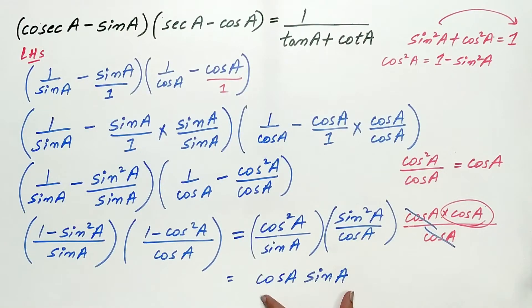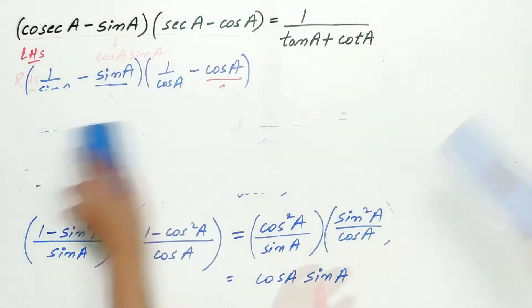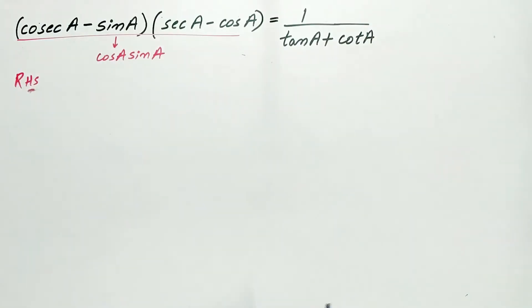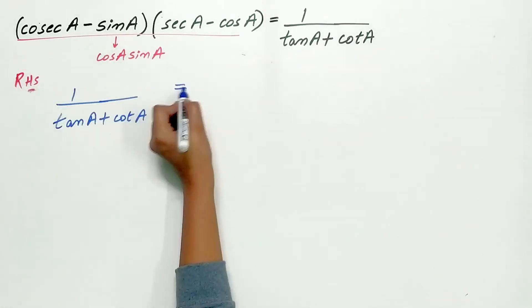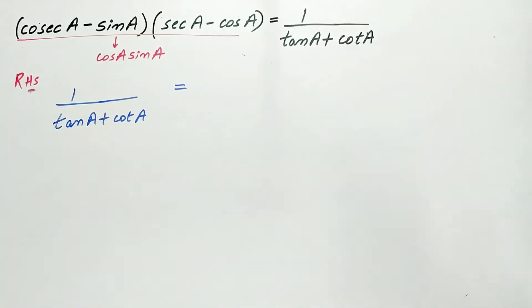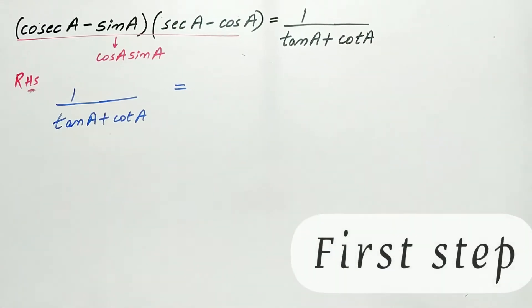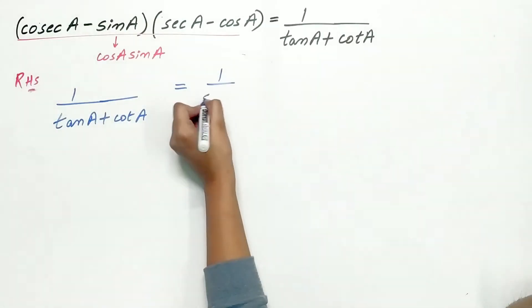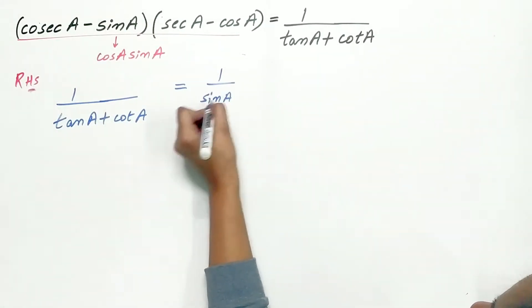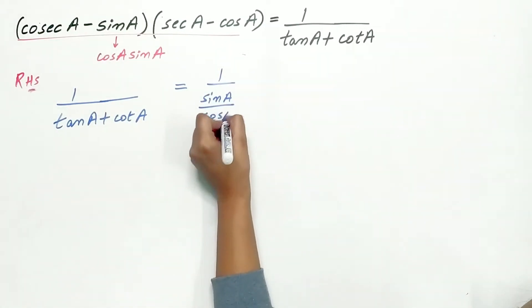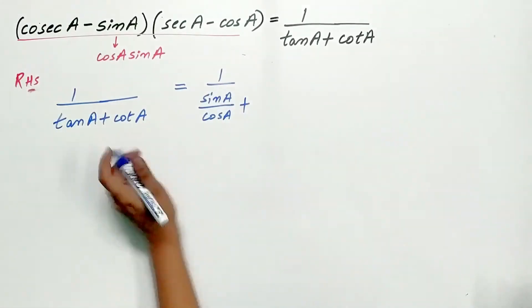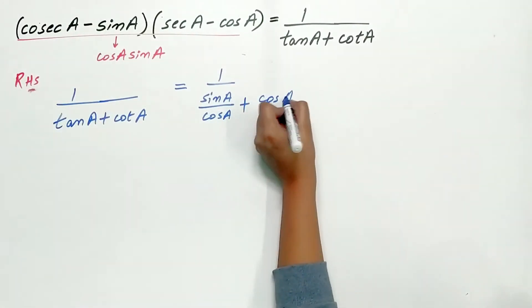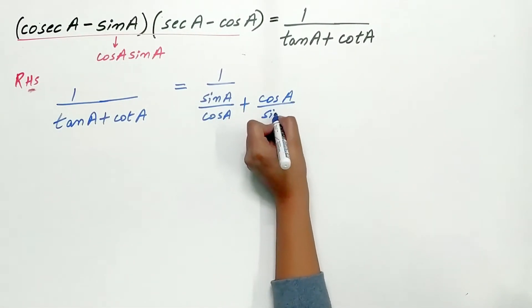This is our expression for the left hand side. Now let's simplify the right hand side. Express tan and cot in terms of sin and cos. So tan A is sin A by cos A, plus cot A is cos A by sin A.